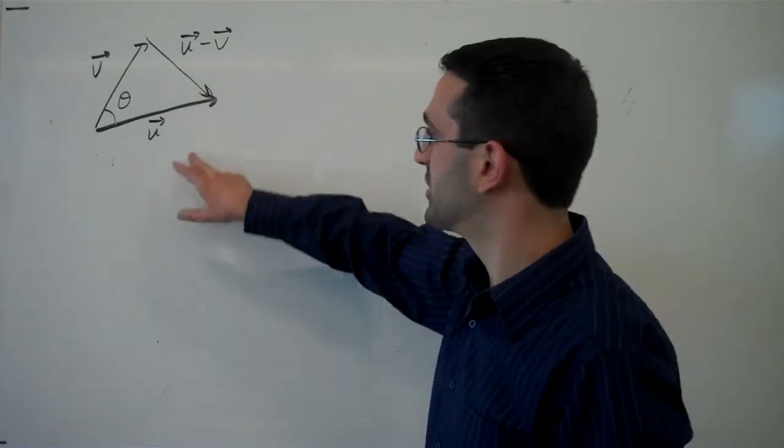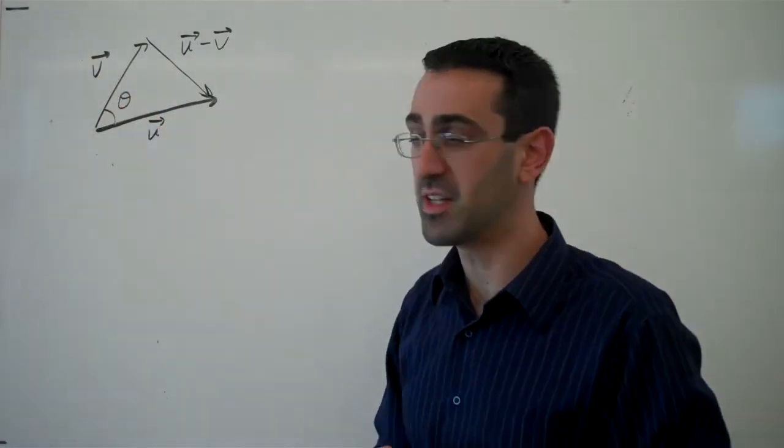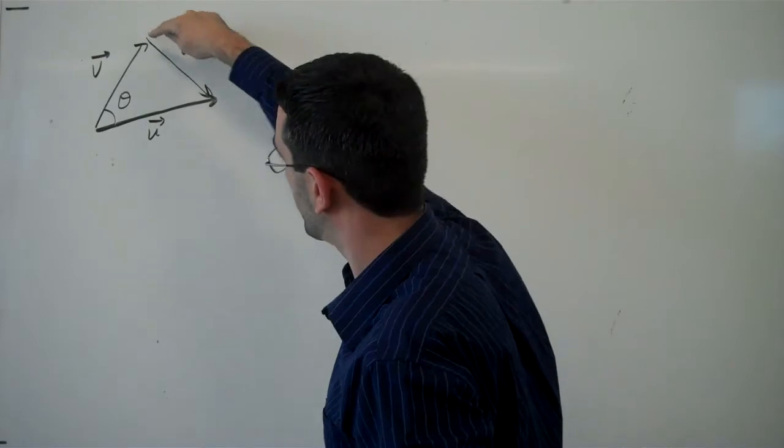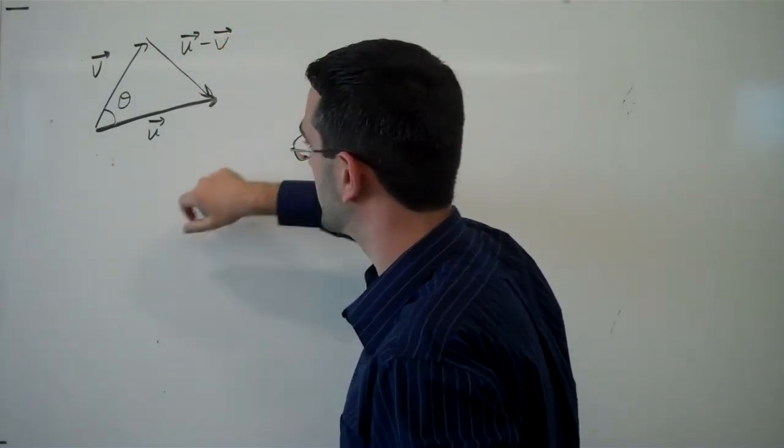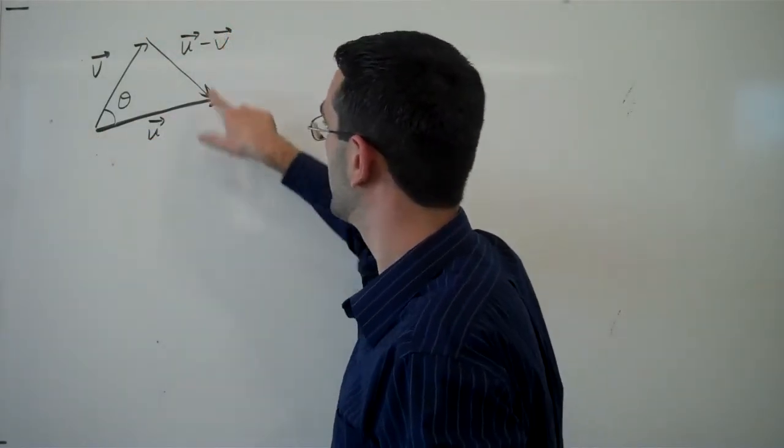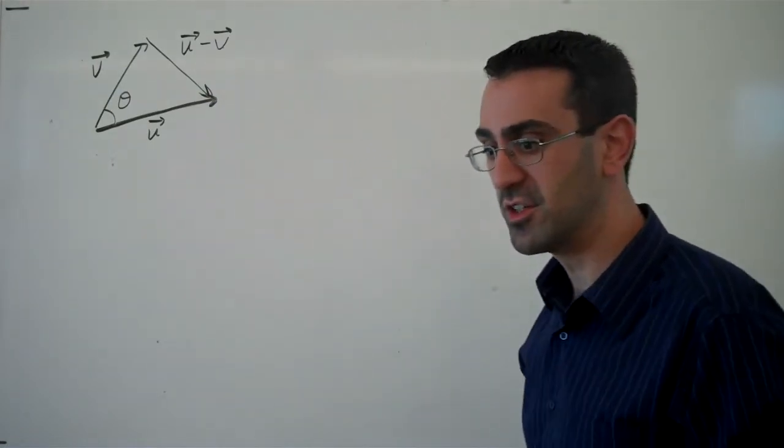So here we've got vectors u and v with some angle theta between them. Suppose then I find the difference between these vectors, so u minus v is this vector from v to u.